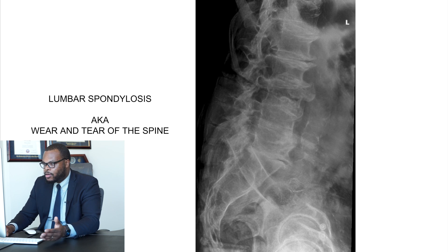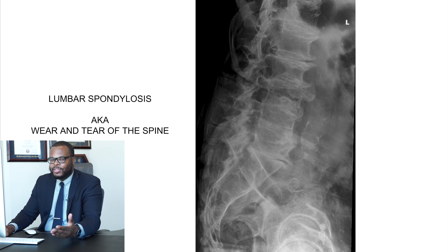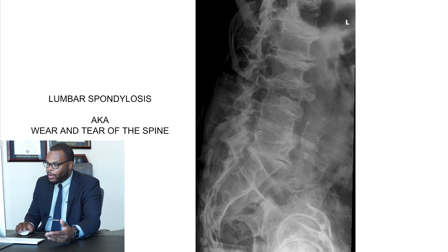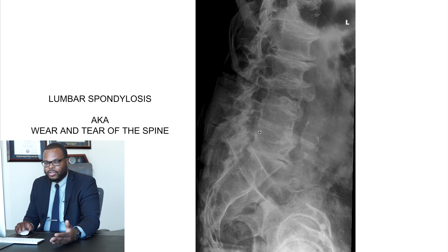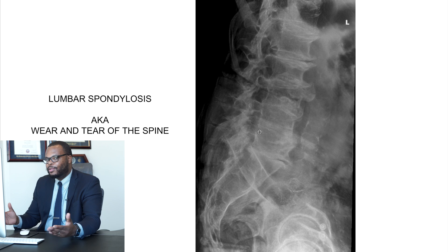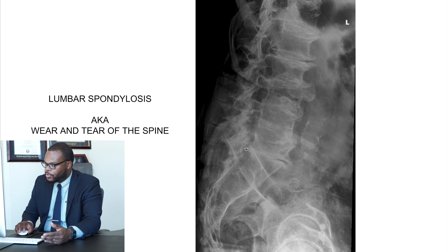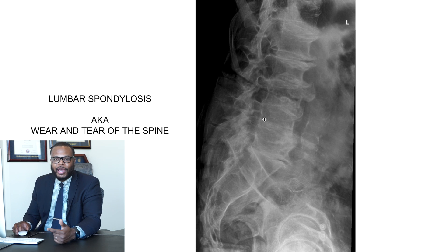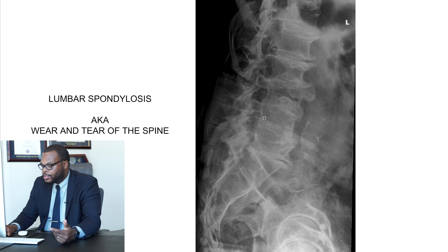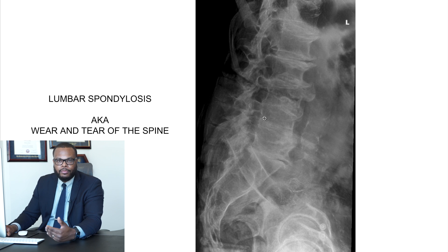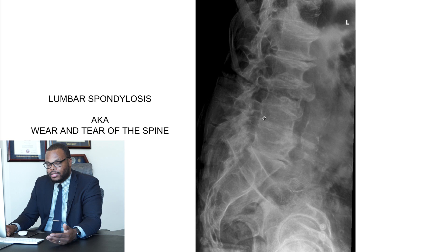Now a couple of cases. Lumbar spondylosis — this is basically the wear and tear of the spine, and everyone's going to get this as we age. You can see this patient has pretty advanced, severe arthritis. Just like you get arthritis in your hip, knee, or shoulder, everyone's going to get it in their back as well. I can't even see their intervertebral discs — they're pretty collapsed. Lots of bone spurs. They've lost their lumbar lordosis, which is the curvature in the spine, so the back is really flat. Most patients who have arthritis can be treated with physical therapy, anti-inflammatory pain medications, and sometimes injections.